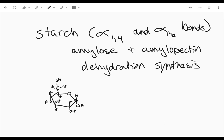This is a carbon, that's a carbon. So if I'm numbering my carbons, this is my carbon 1, my carbon 2, my carbon 3, my carbon 4, my carbon 5, and then my carbon 6. So let's do an alpha 1-4 bond first.